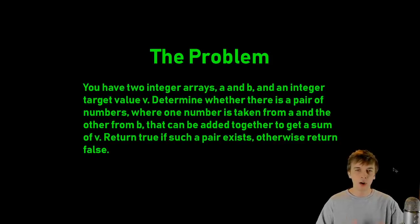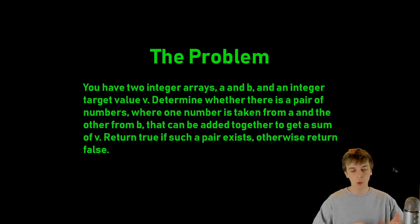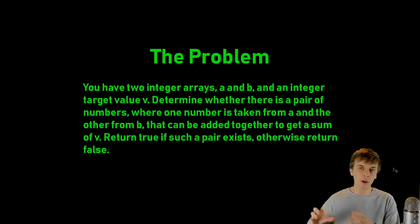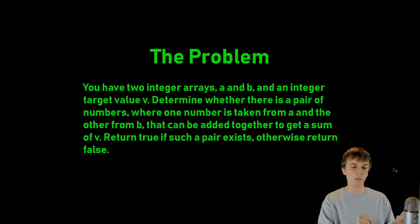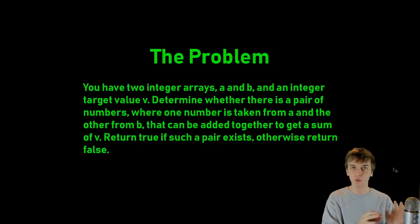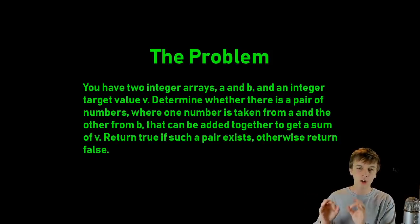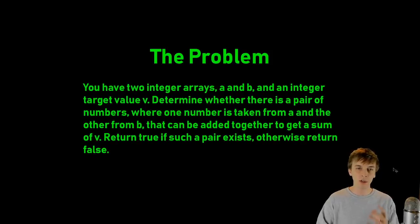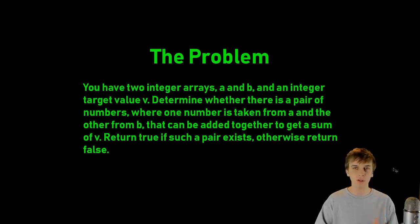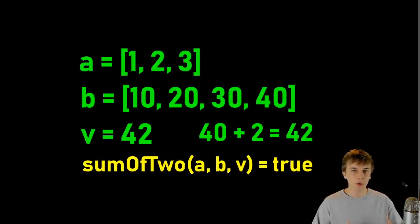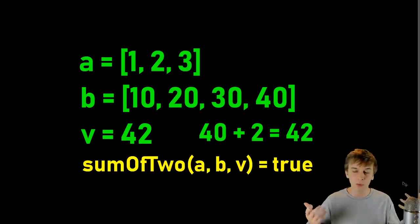So here's the problem we're going to be dealing with. We have two integer arrays, A and B — two arrays of numbers — and then we also get a target value. We have to take one number from both of those arrays and determine whether there are two numbers, one from each array, that add up to that target value. Return true if this is possible, false if not. We're going to have this function called Sum of Two, and we take an A and B which are integer arrays.